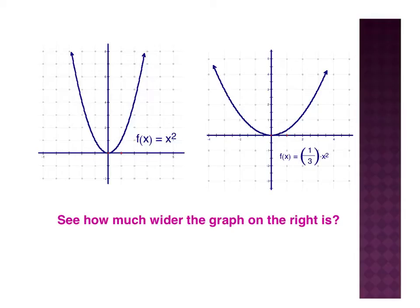That 1 third being out in front, I know that it's vertical, and because it's 1 third — it's between 0 and 1 — it's a compression. So when I'm between 0 and 1, I have a compression. When I'm greater than 1, it's a stretch. So I have a vertical compression by a factor of 1 third.